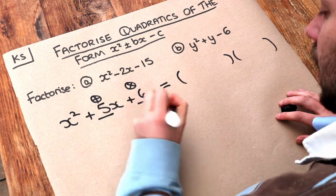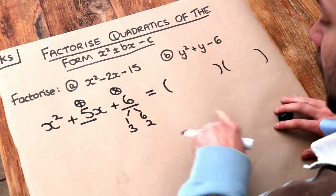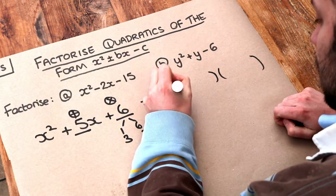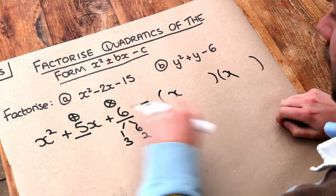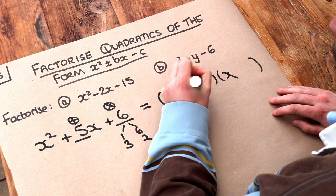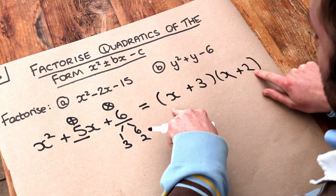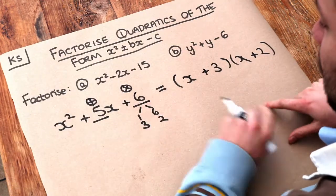It could be 3 and 2 and indeed those numbers do add up to give 5. Remember that we put an x at the start of each of these brackets because that's x squared, that's x, and then we use these two numbers here. So we've got plus 3 and plus 2, and they could be either way around.